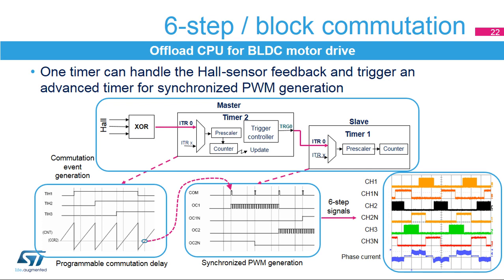The transition from one step to the other is preloaded by software in the commutation interrupt routine and automatically transferred by hardware to reprogram the output operating mode when the next commutation arrives. The figure at right shows the six PWM signals for two consecutive complete six-step sequences, together with the current in one of the motor phases.